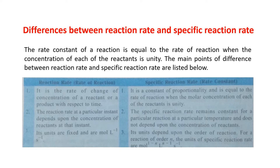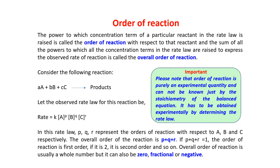Now let us come to order of reaction. The power to which the concentration term of a particular reactant in the rate law is raised is called the order of reaction with respect to that reactant. The sum of all the powers to which concentration terms in the rate law are raised to express the observed rate is called the overall order of reaction. This was all explained in the last lecture.